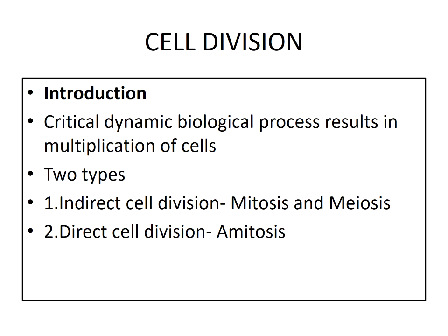Indirect cell division involves a series of sequential biological processes like the disappearance of the nucleus, disappearance of the nuclear membrane, changing of chromatin into chromosomes, movement of chromosomes towards opposite poles, and reappearance of the nucleus, nucleolus, and nuclear membrane. It is a very complex process — examples include mitosis and meiosis. The second type is direct cell division, which involves the division of a nucleus and cell without any sequential biological process. It is a very simple process, and an example is amitosis.